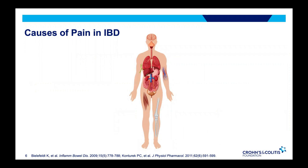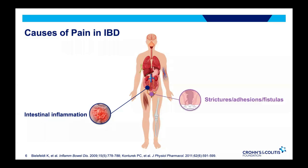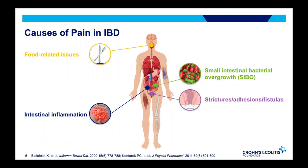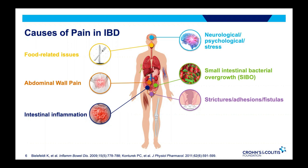There are many causes of pain in inflammatory bowel disease. The one we think about most often is intestinal inflammation, but there are other issues as well, including complications related to IBD such as strictures, adhesions, or fistulae, food-related problems, small intestinal bacterial overgrowth or SIBO, abdominal wall pain, and neurological, psychological, or stress-related issues. We'll tackle each of these in the next few slides.